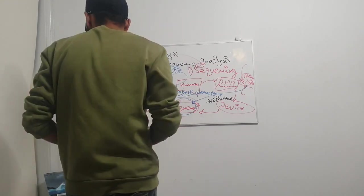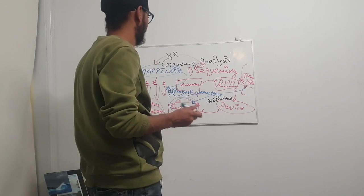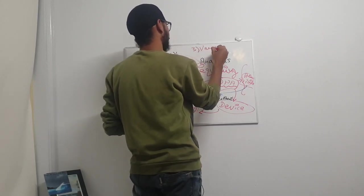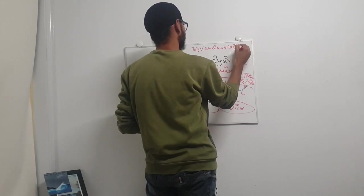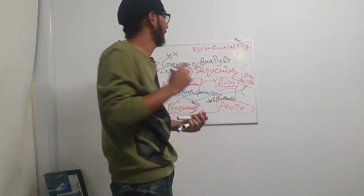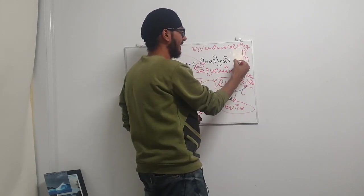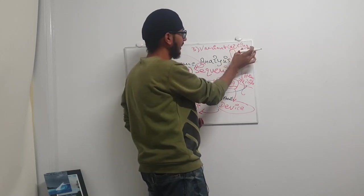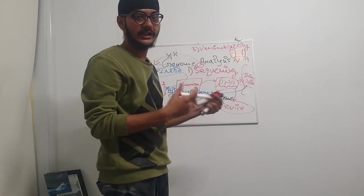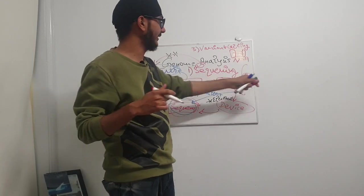The next thing is variant calling. What does this mean? Whatever samples we already have, like we have this sample A and we are taking a new sample N, we compare this new sample with the other sample A. This is called variant calling - we try to compare that the new DNA that we have taken, how much this differs from the last DNA samples, the other DNA samples that we already have.